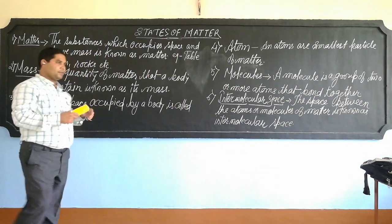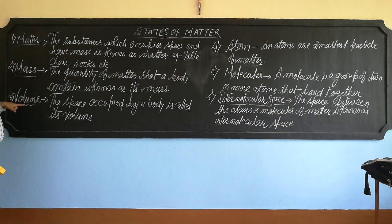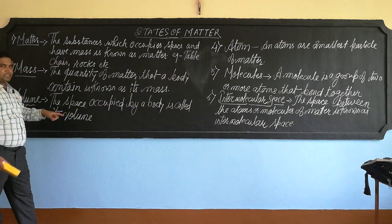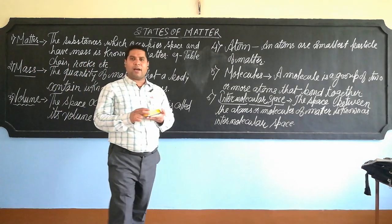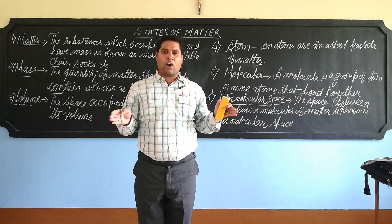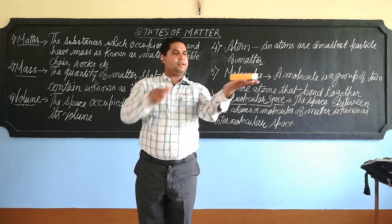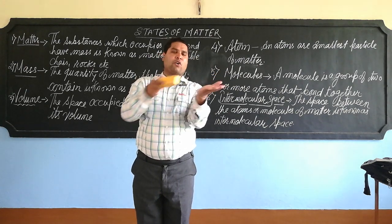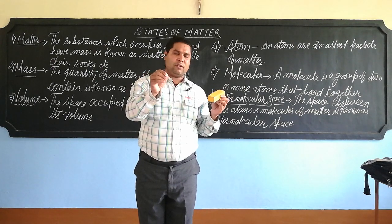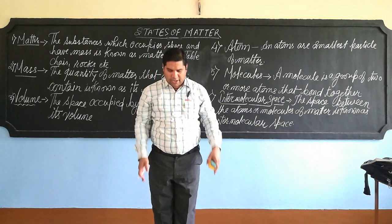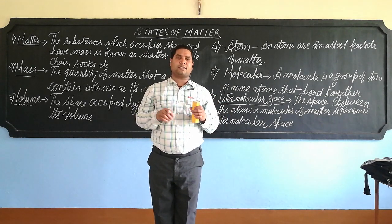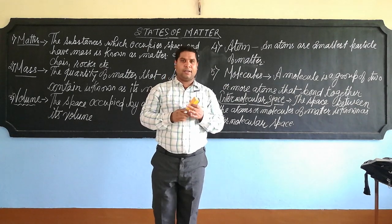The next topic is volume. The space occupied by a body is known as its volume. For example, the duster occupies space, and that occupied space by the duster is known as its volume. Similarly, I am standing here and occupying space, and that occupied space is known as my volume.